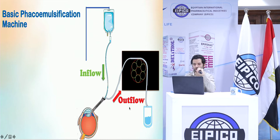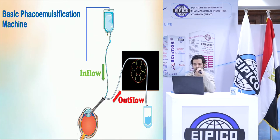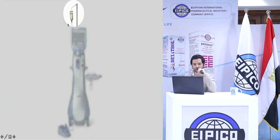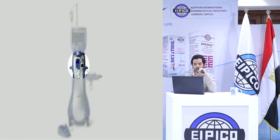Let's put this into context in a real phacoemulsification machine. This is the famous and popular Alcon Infinity machine. You can see the basic structure: here is the source of fluid or the source of inflow, this is the screen showing the main parameters of phacoemulsification, this is the collecting bag with the cassette and the rollers, and finally there is the foot switch.